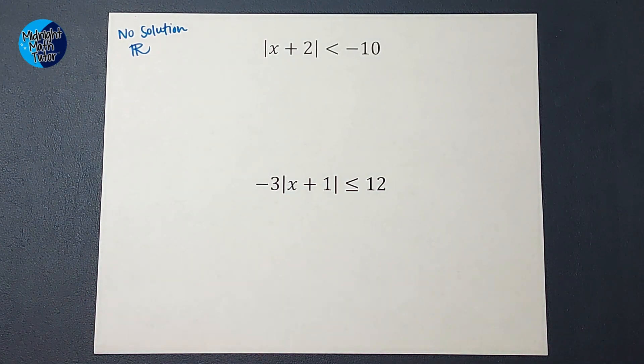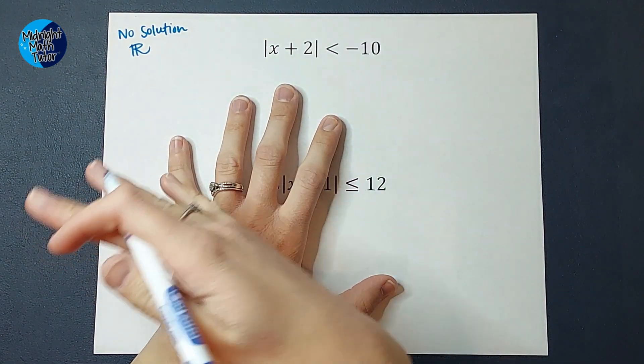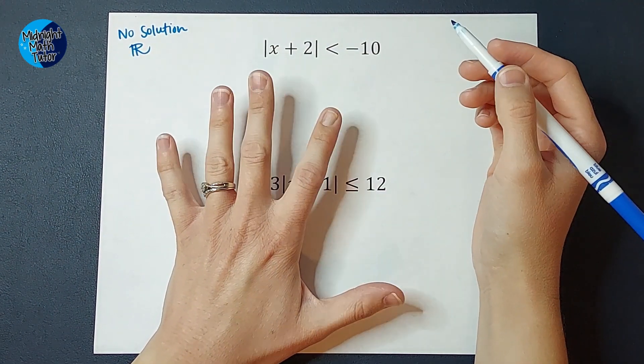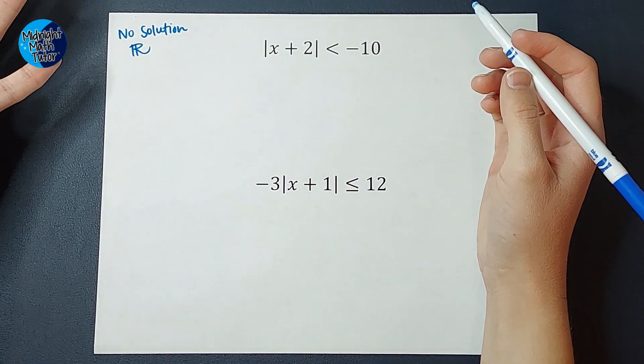So let's go ahead and look at this first one. Whenever I'm solving these, the first thing I want to do is get my absolute value bars alone on one side of my inequality, so we're good here. They're by themselves. From there, we just kind of think about it logically.